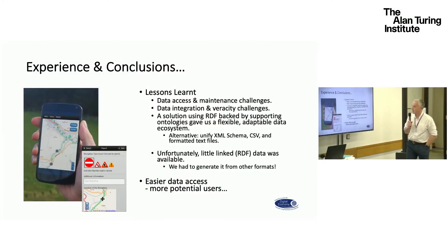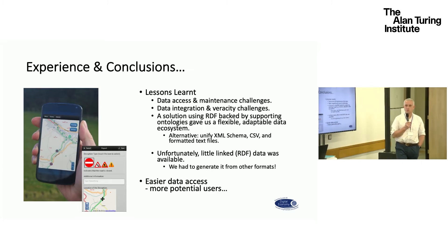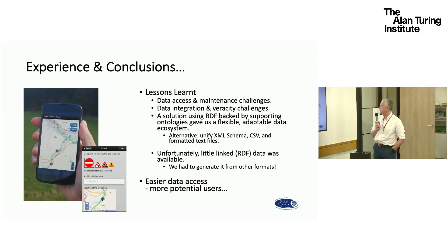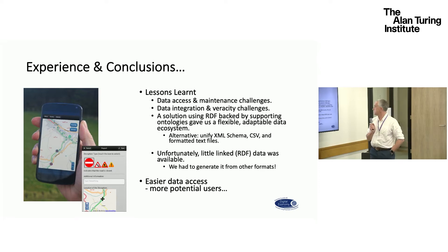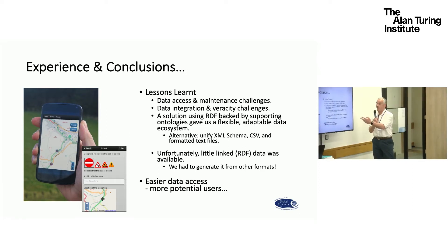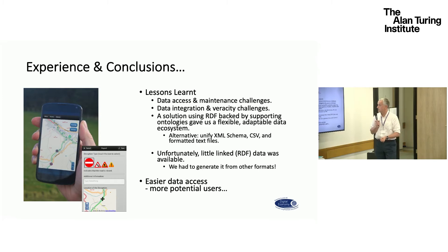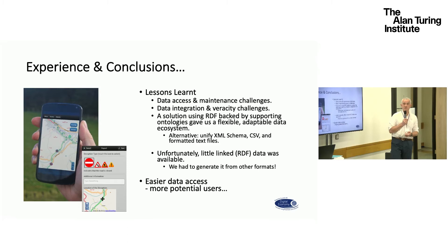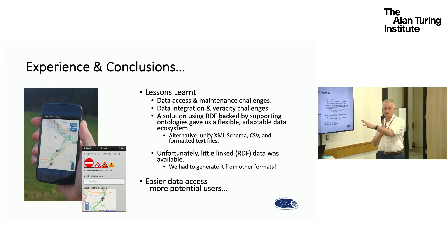So what did we conclude? To build a five-star linked data solution, there was very little actual five-star data available. Getting hold of data was difficult — it wasn't in the right format — and we had to do a huge amount of work to get the data into the right format. There were lots of quality issues in the data; we discovered, for example, bus stops that were in timetables but not in NAPTAN, and vice versa. We were ultimately able to build a highly flexible, adaptable data ecosystem that wasn't just designed for the Scottish Borders — the conceptual framework could be used anywhere — but little linked RDF data was available and we had to generate it from lots of other formats.